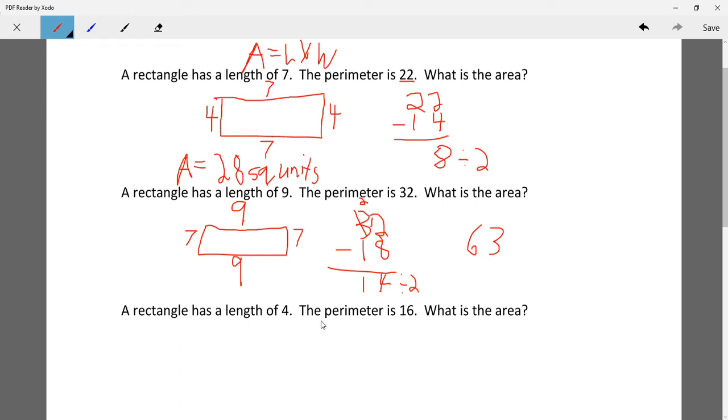So let's see. There's a rectangle that has a length of 4. The perimeter is 16. What is the area? So let's see. We have 4, okay? And the perimeter is 16.